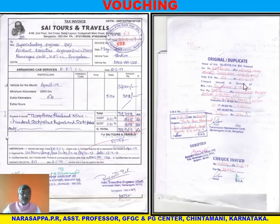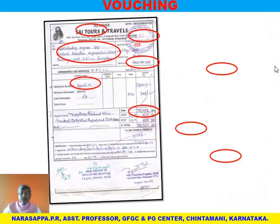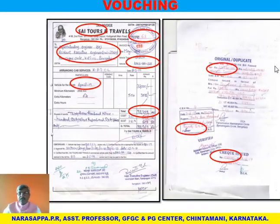Here we can see the details on a sample voucher — the name of the company 'Soy Tours and Travels,' the number 63, date 23/5/2019, another reference number 673, the address, and particulars. These are the original or duplicate vouchers — this one shown here is the original voucher. So we have rounded off what are the most important things in a voucher.